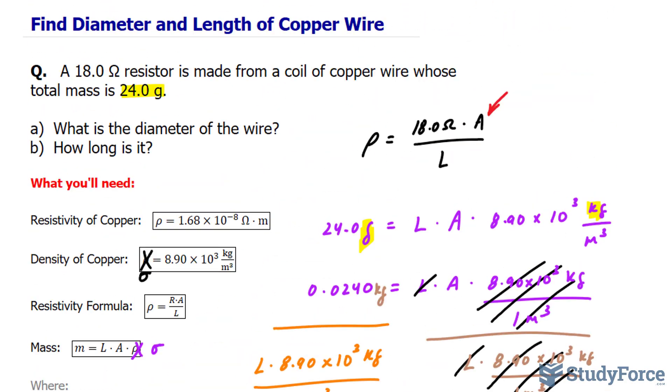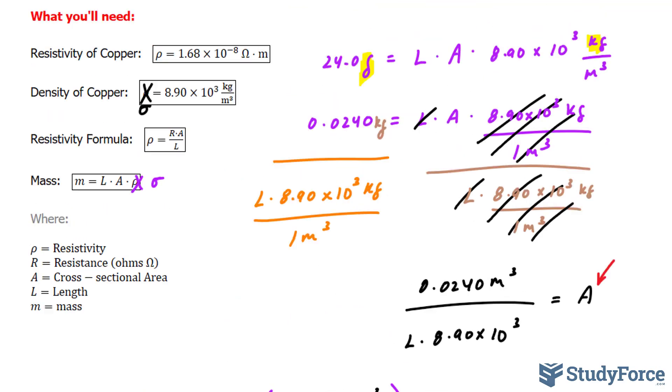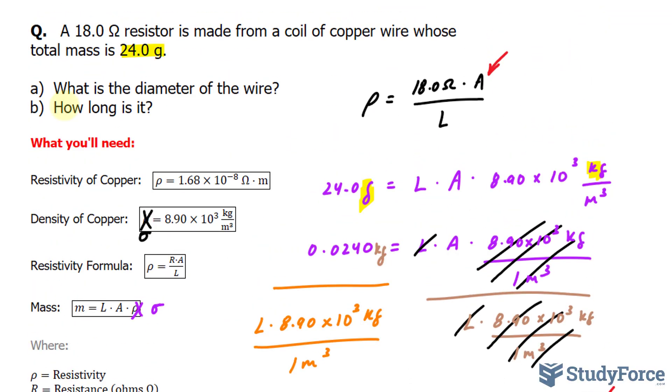Now remember, significant figures are important. We started off with 3. And if you followed the rules, you should also end off with 3 here. So we could write down that the length is 53.8 meters. We just answered one of the questions. We answered question B. Now we move on to A.